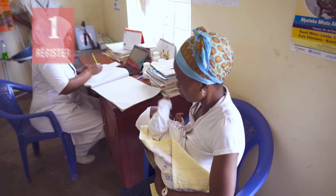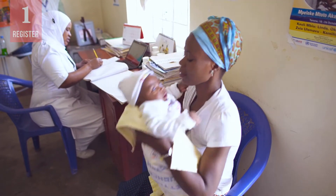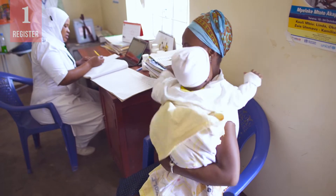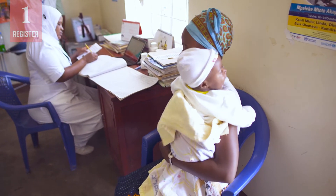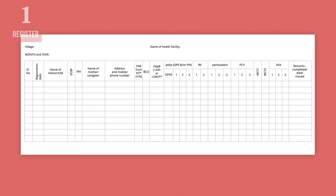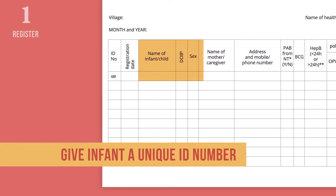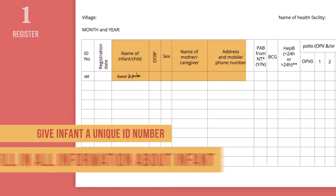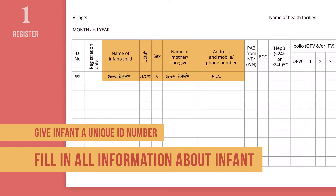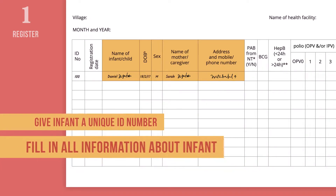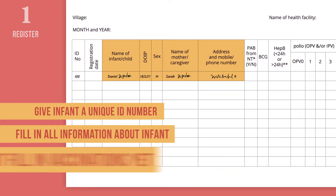As soon as a new infant arrives at your health facility or at an outreach session, create a new line for him or her. Start by giving the infant a unique identification number. You will put this number on the register and on the infant's immunization card. Fill in all information about the infant and be sure to write down the infant's date of birth. Fill in everything except the vaccinations being administered.